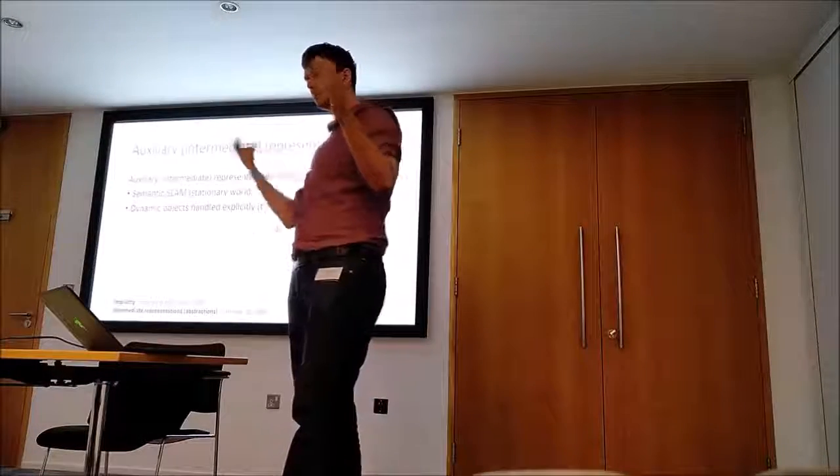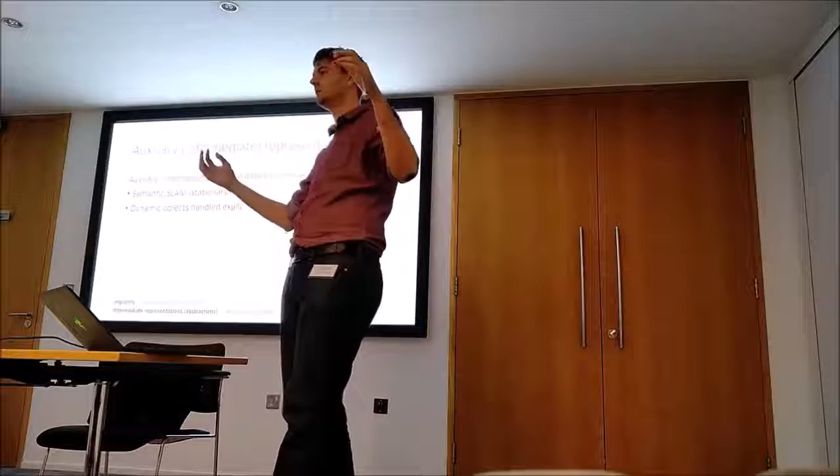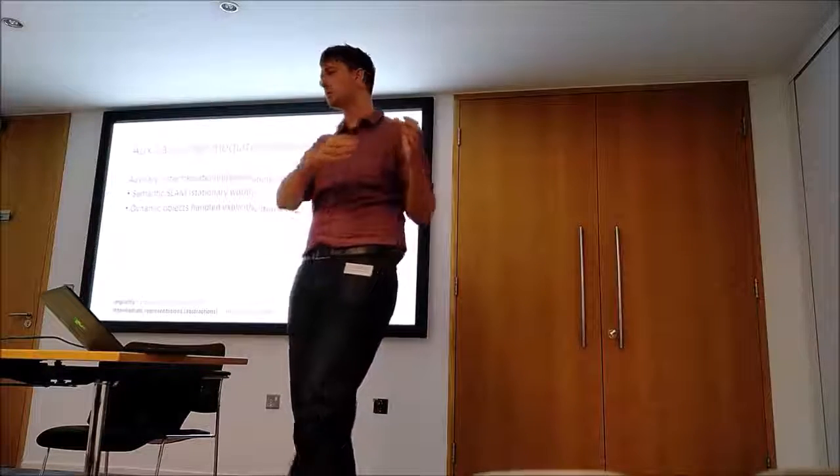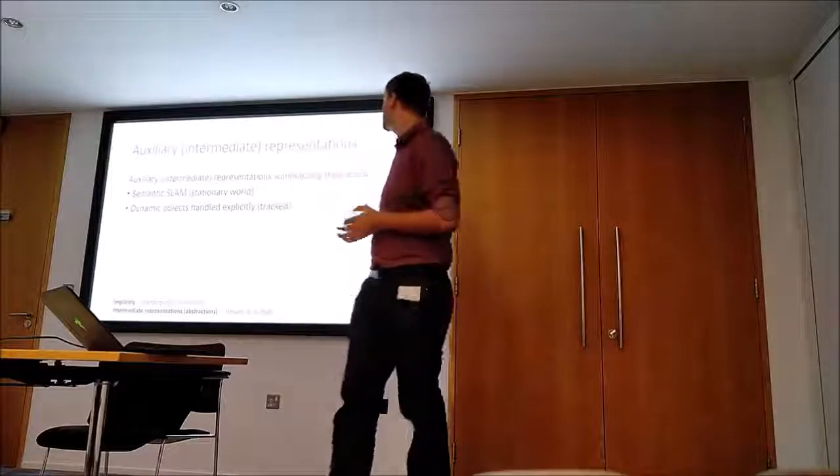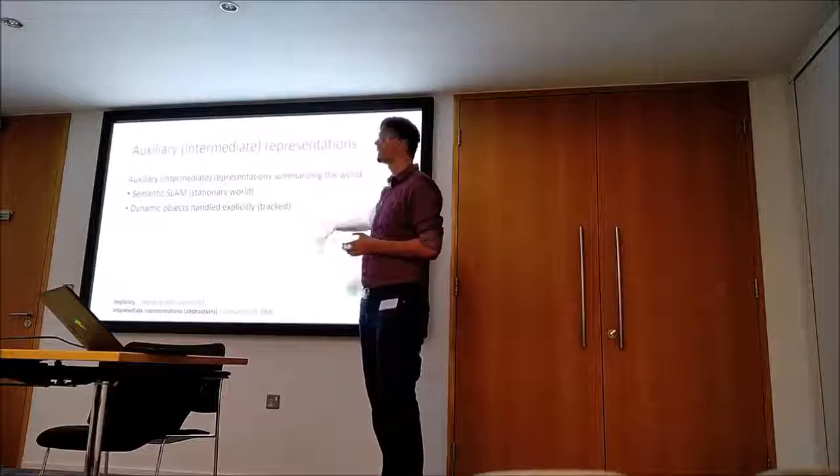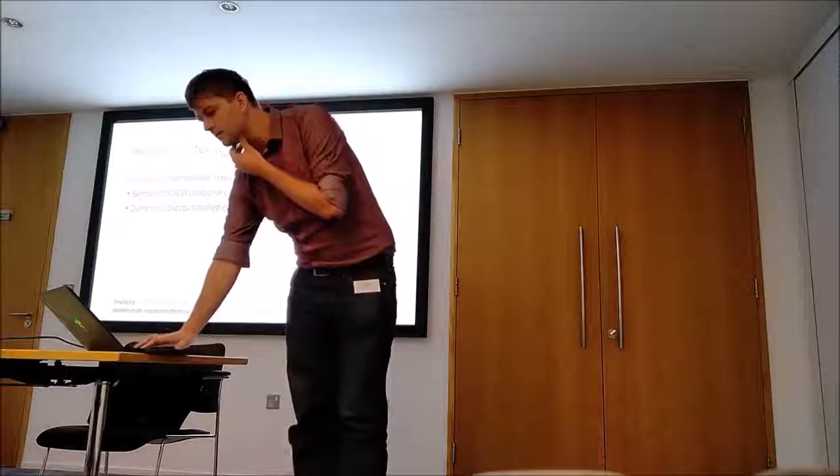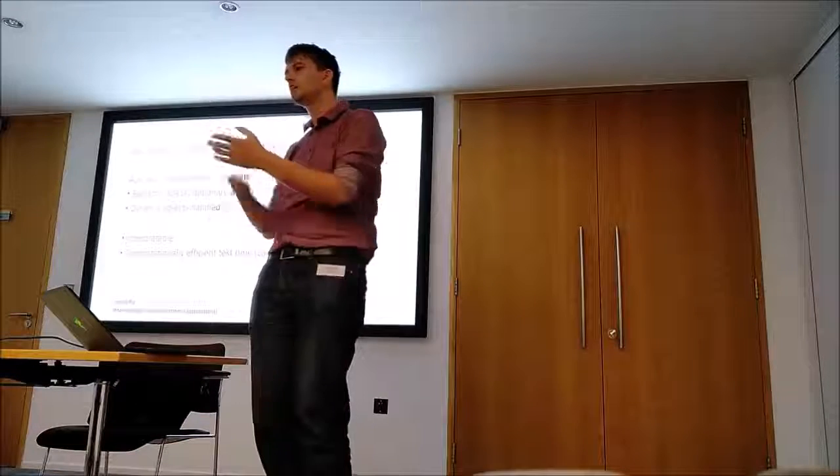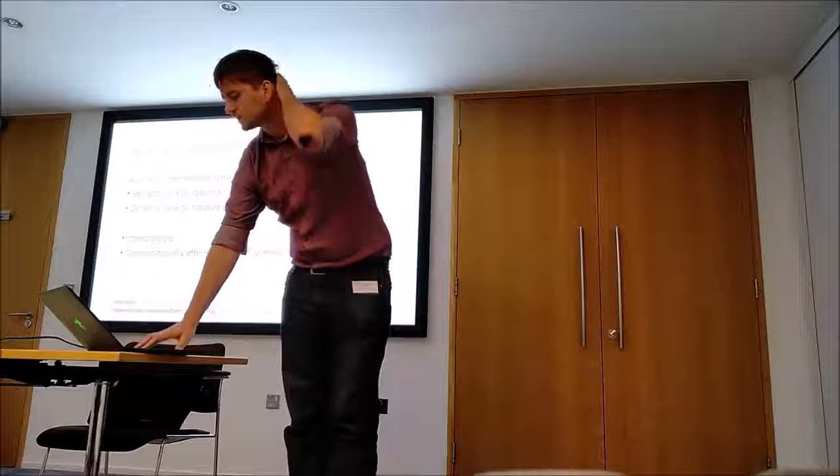And there are multiple ways how you can do it. Some people are trying to push it implicitly. I'll be much more arguing for explicit intermediate representations or abstractions. So if you think about the world, majority of it actually remains static. So you can deal with it in a standard way through semantic SLAM. You can recognize things around yourself. And then you just need to relocalize the camera and perfectly know what's going on. And then on top of that, we just need to deal with dynamically moving objects and some sort of change detection.